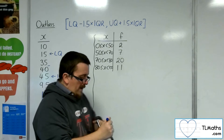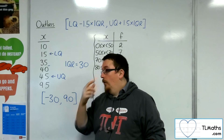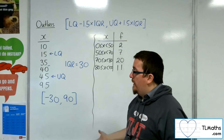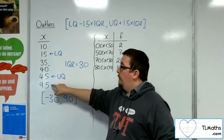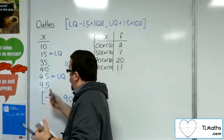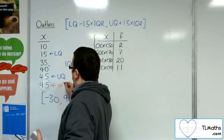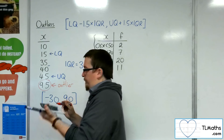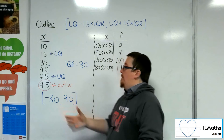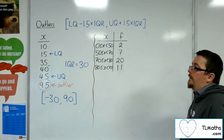And the upper quartile, 45, plus 1.5 times the IQR gives 90. So anything less than minus 30 or greater than 90 is considered an outlier. In our case, we have one outlier which is 95. It doesn't mean it's been recorded incorrectly — it may be perfectly reasonable — but it is considered an outlier in the set.